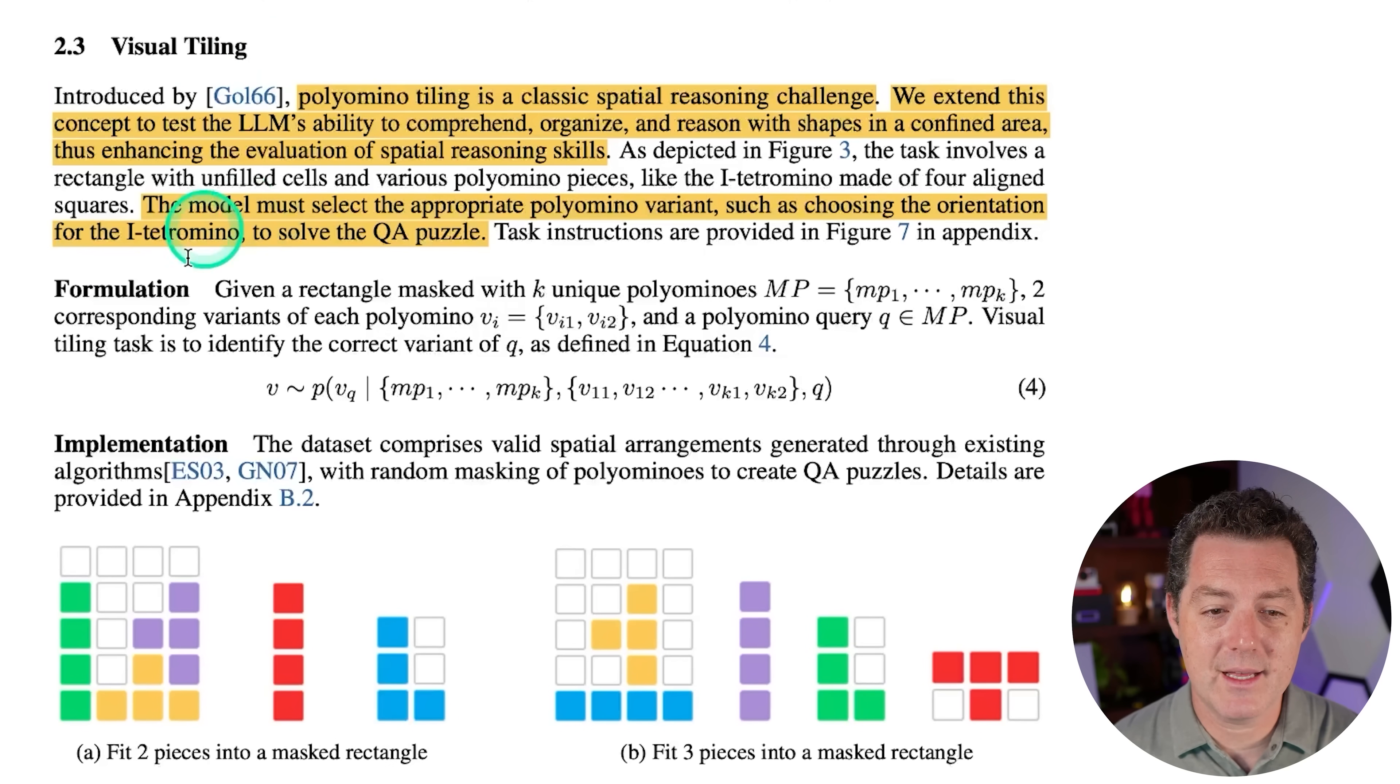This involves two subtests, route planning and next step prediction, requiring multi-hop spatial reasoning while the former is more complex. And here is the formulation of it. So it's represented by a formula rather than just passing in like an image of that 2D grid. Then we have visual tiling. And that is what we're seeing right here in these examples. And let me just talk about that for a second. Polyomino tiling is a classic spatial reasoning challenge. We extend this concept to test the LLM's ability to comprehend, organize, and reason with shapes in a confined area. So essentially, you have a grid with different colors, different shapes, really, and you are tasked with finding a place for a new object. Now, if we just look at this, we can tell that within this grid right here, we can place this red 4x1 or 1x4 object right here. So that is essentially what this test is accomplishing.